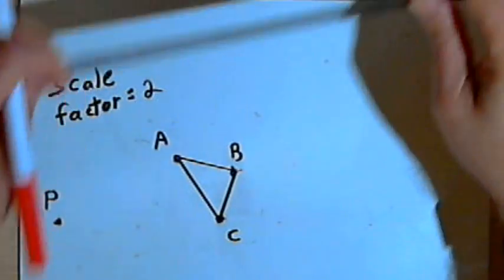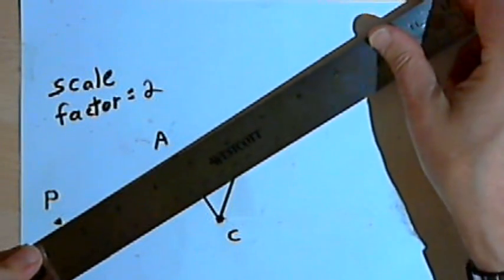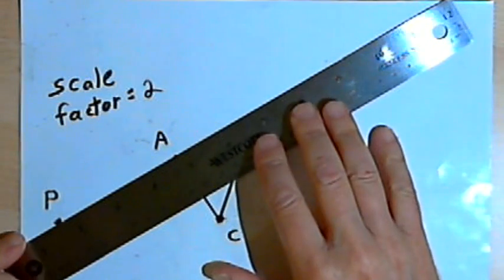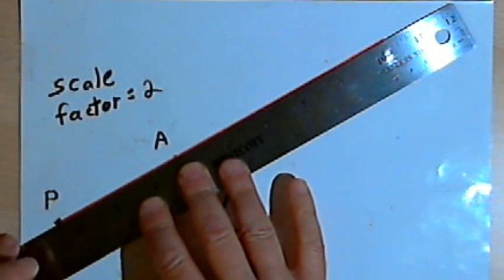The first step is going to be to draw a ray starting at point P and going through point A. I'll use a straight edge for that. I'll draw that ray and continue quite a ways.